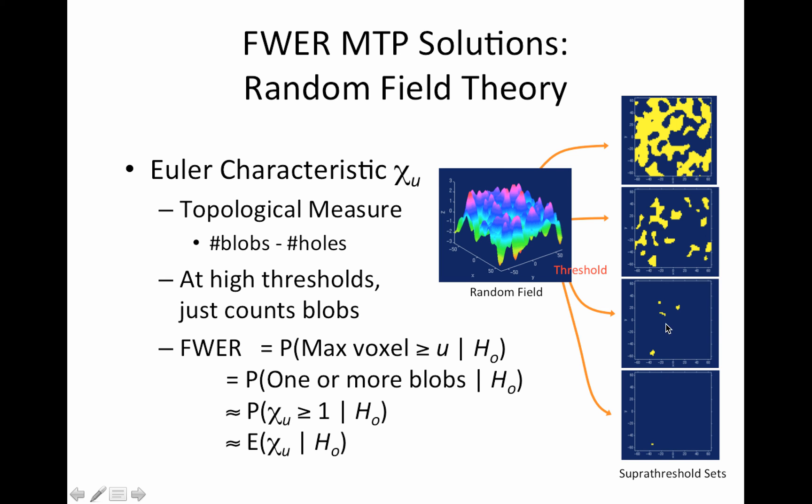So we're kind of recognizing, hey, well, if our threshold's high enough, you know, we could just count blobs. And this blob count actually has a distribution associated with it according to this Euler characteristic.